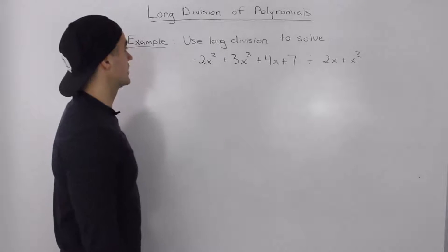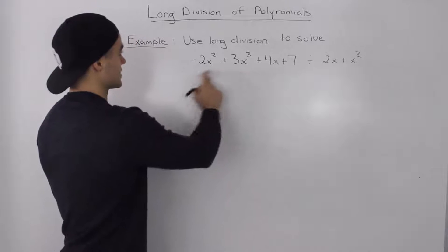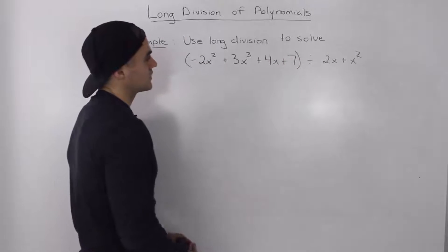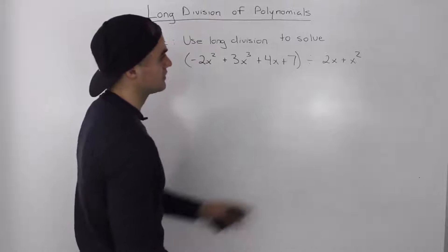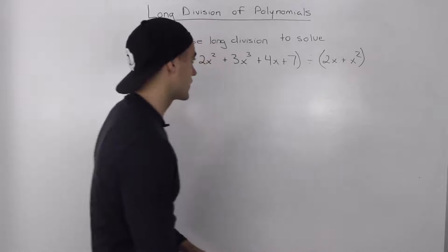What's up guys, so moving on to the next example for the long division of polynomials. We got to take this polynomial over here, this negative 2x squared plus 3x cubed plus 4x plus 7 and divide it by 2x plus x squared.